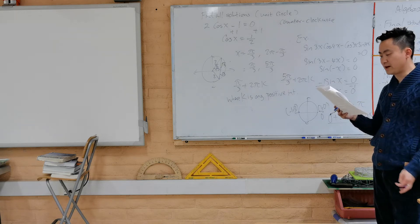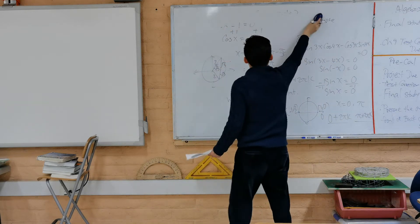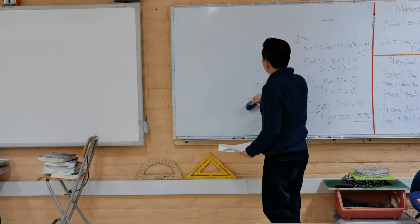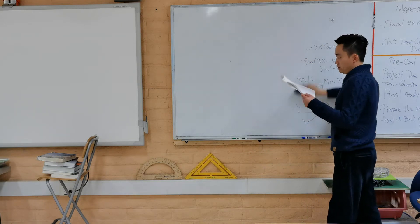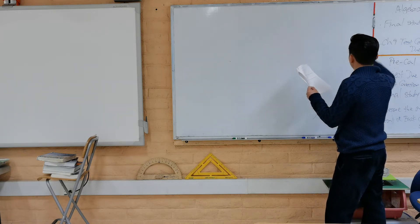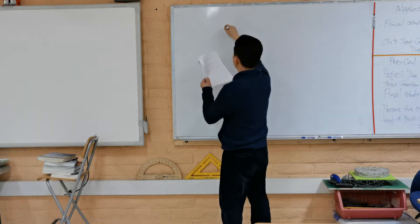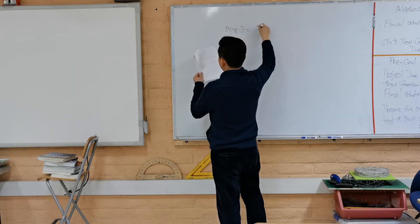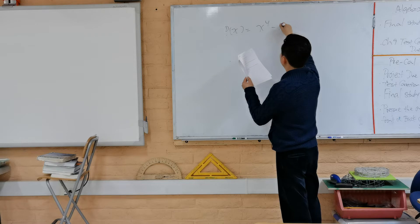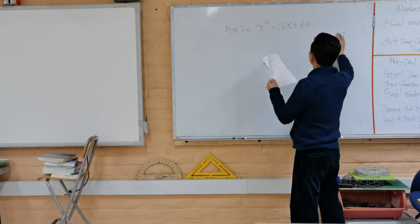Now let's talk about factoring polynomials. You may wonder about using p over q if it's not factorable, but normally you want to factor first. Here's a fourth-degree trinomial: p(x) = x⁴ − 16x² + 64. Using the box or diamond method, this factors as (x² − 8)(x² − 8), or (x² − 8)².